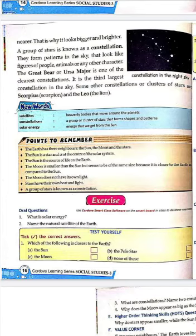Some other constellations, or clusters of stars, include Scorpius (also known as Scorpion) and Leo (also known as Lion). यह सब हम अपने sky में रात में देख सकते हैं। Students, you have to learn these new words from the book.